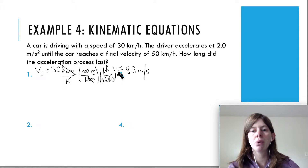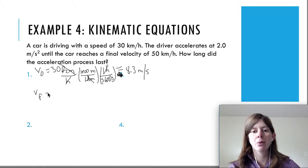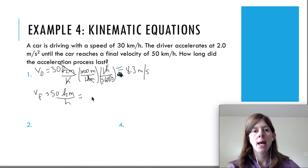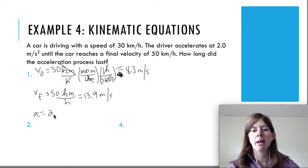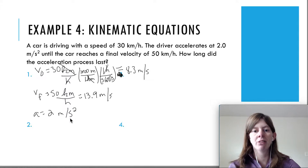Next, we have a final velocity of 50 km/h. Converting using the same factors — 1000 meters per kilometer and 3600 seconds per hour — gives about 13.9 meters per second. The acceleration is 2 meters per second squared, which is already in SI units. And we're looking for how long it took, so our unknown is time.